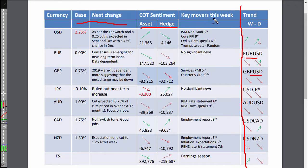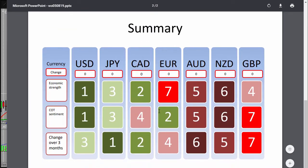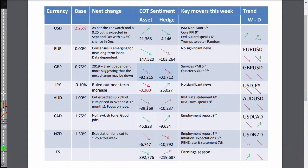We can also look at the key movers for this week — what's actually going on that might move a currency. In the second part there's a summary looking at economic strength, the COT sentiment, and the change over three months. We'll be looking at that in a moment. To kick off, just a quick review through each currency — starting with the US dollar.